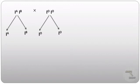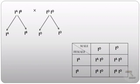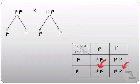Now let us consider a father with blood group O and a mother with blood group AB. The mother's genotype is IᴬIᴮ and the father's genotype is IᵒIᵒ. From IᴬIᴮ we get gametes Iᴬ and Iᴮ; from IᵒIᵒ we get gametes Iᵒ and Iᵒ. From the Punnett square, two children will have blood group A and two children will have blood group B. No child will have blood group AB or blood group O.